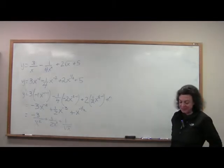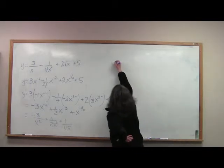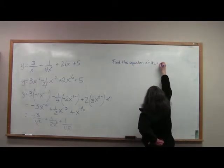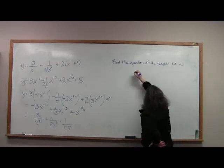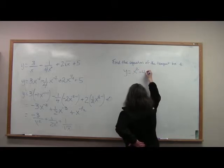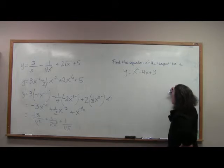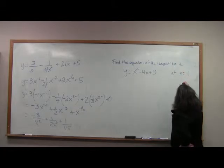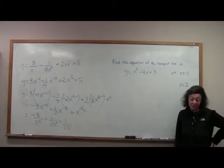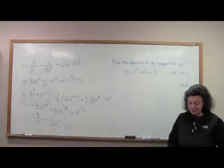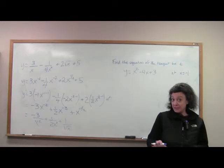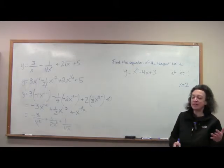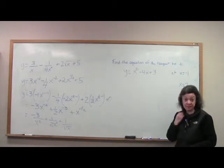For the last example, find the equation of the tangent line to y equals x squared minus 4x plus 3 at two points: x equals negative 1 and x equals 2. I'm doing this for a very precise reason — we'll do the computations, get the equations of the lines, and then look at the graph of the function to see how this totally matches our intuition.